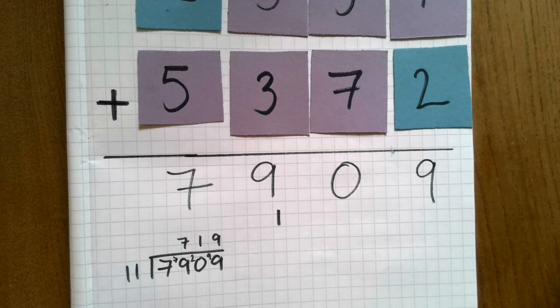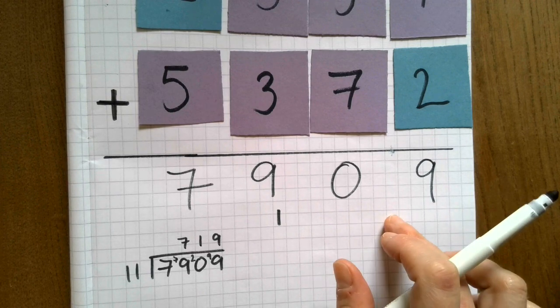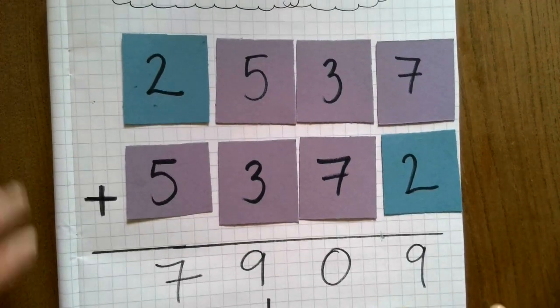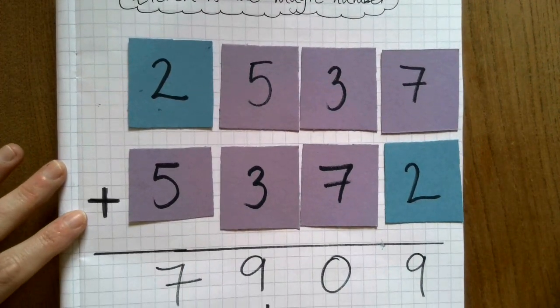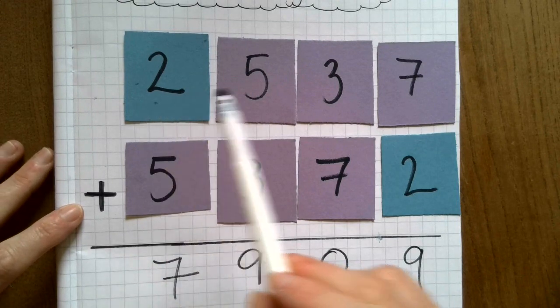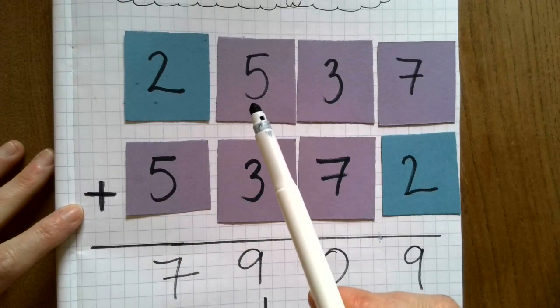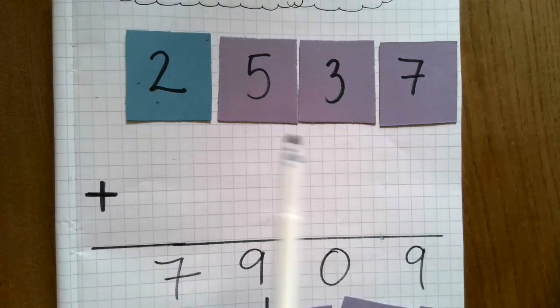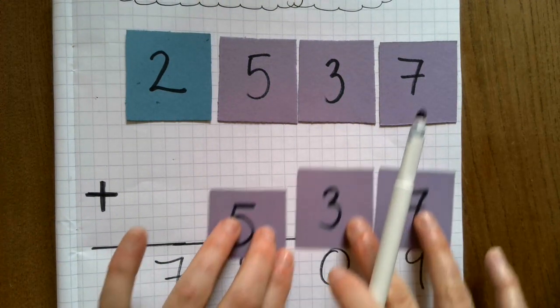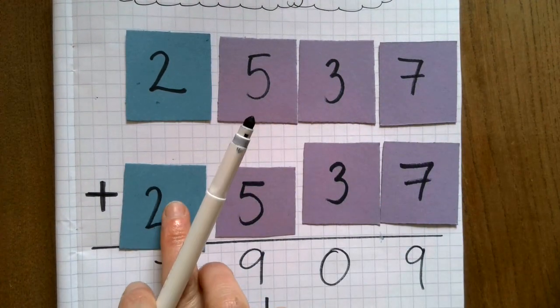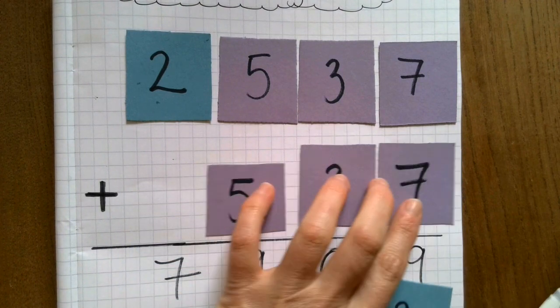That means that 7909 is divisible by 11. Now I'd like you to do this with some different four-digit numbers. Remember, you take the four-digit number, then you take it again and shunt the first digit all the way to the end, and those are the two four-digit numbers that you add together.